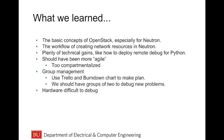Lastly, what we learned: we learned the basic concepts of OpenStack, especially in regards to Neutron, the workflow of creating network resources in Neutron, and analyzing them with their attributes. We made plenty of technical gains, like how to deploy a remote debugging session for Python. We should have been a little more agile and less compartmentalized. For group management, we used Trello and burndown charts, but should have worked in groups of two to debug new problems. Hardware was pretty difficult to debug.